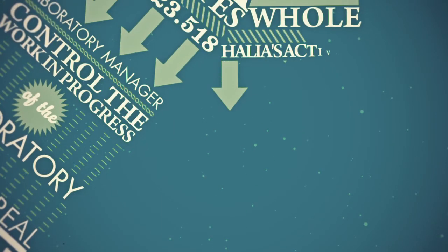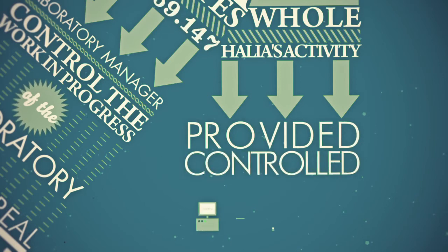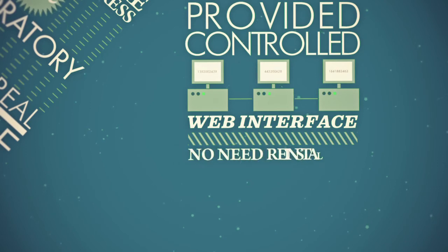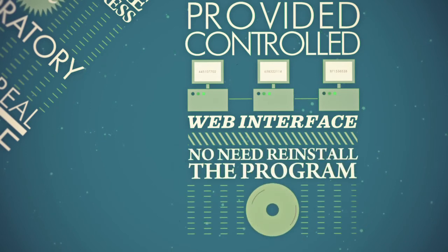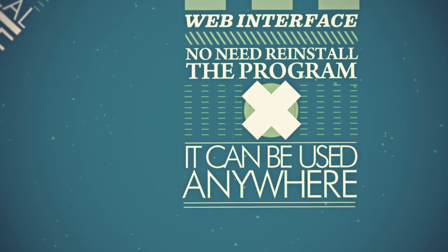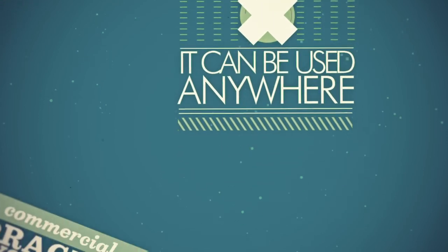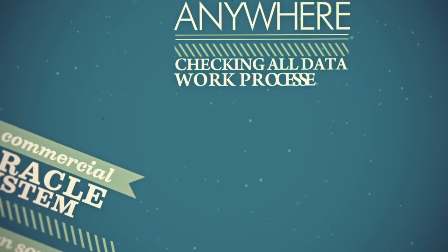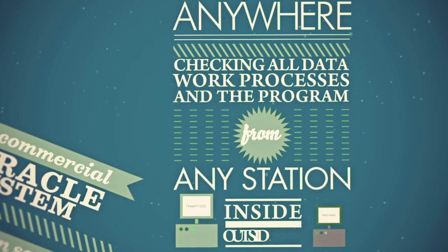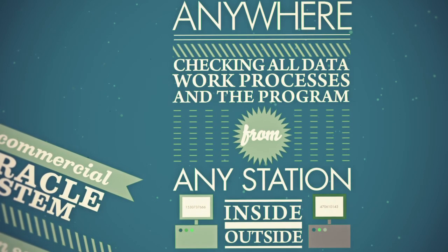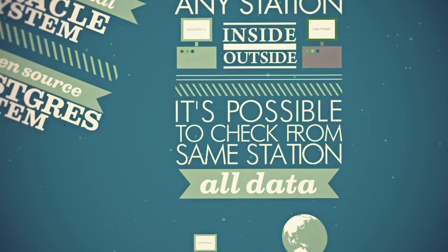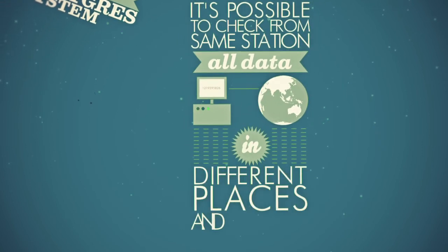The whole of HALYA's activity is provided and controlled through a web interface, and this has several advantages. Firstly, there's no need to reinstall the program in case of PC replacement, and it can be used anywhere because the software is web-based. HALYA also allows for the checking of all data and work processes from any station inside or outside the hospital. At the same time, it's possible to check from the same station all data coming from laboratories which are in different places and cities.